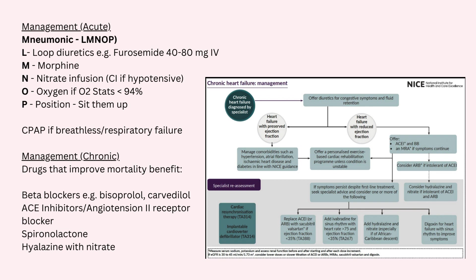If symptoms still persist after the ACE inhibitor and the beta blocker — or the adjuncts if they're intolerant of the ACE inhibitor — then you want to replace the ACE inhibitor or ARB with sacubitril/valsartan, especially if their ejection fraction is less than 35%. If their ejection fraction is less than 35% and their heart rate is over 75, you want to give them ivabradine. If they are of Afro-Caribbean descent, give them hydralazine with nitrate, and if they have signs of AF, give them digoxin.